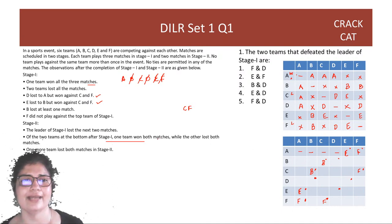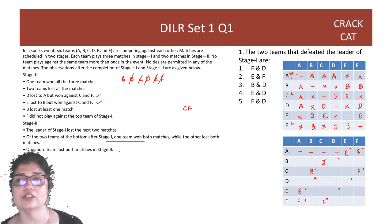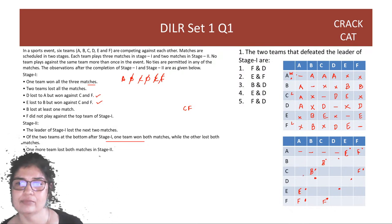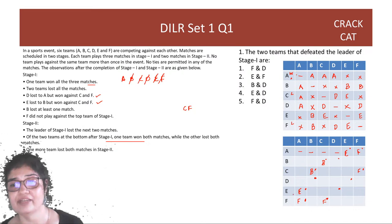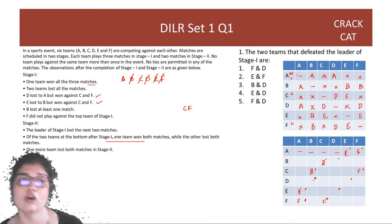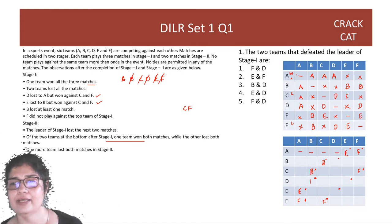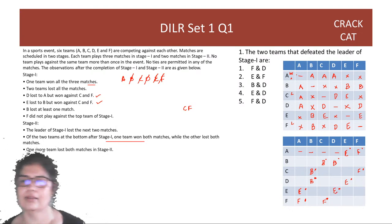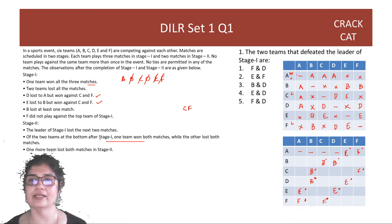One more team lost both stage 2 matches. A already lost both, C lost both. B won a game, E already won one. So D lost both stage 2 matches — meaning B beats D and E beats D. We've now filled all five stage 2 matches.